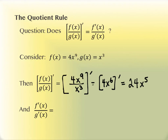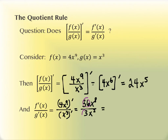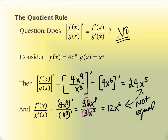The question is: could we have done it by taking derivatives first, then simplifying — in backwards order? The derivative of 4x⁹ is 36x⁸, and the derivative of x³ is 3x². Dividing gives 36x⁸ over 3x², which simplifies to 12x⁶. That does not equal 24x⁵, so the answer is no — this doesn't work. I can't do this in any order I'd like.